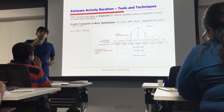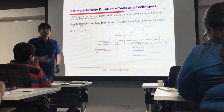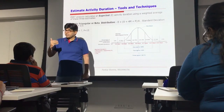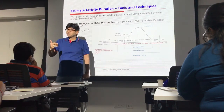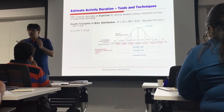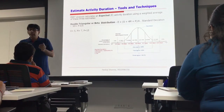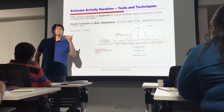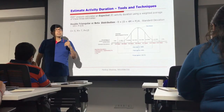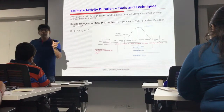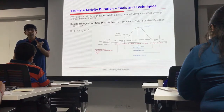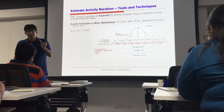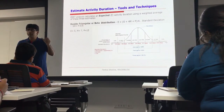Based on the three points — the best case scenario, the most likely scenario, and the worst case scenario — we can find out the expected duration of the project using the formula: Optimistic plus 4 times Most Likely, plus Pessimistic, divided by 6. Let's take a very simple example.